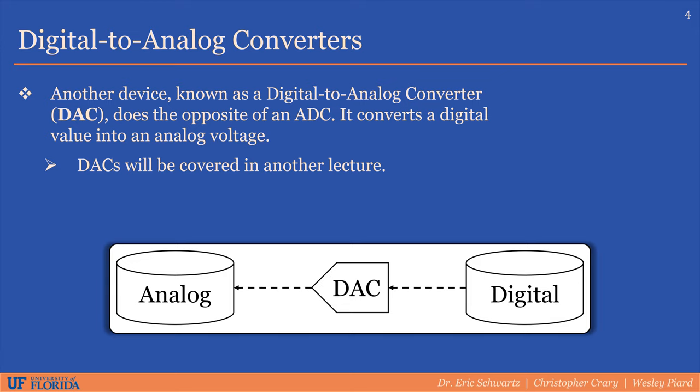Once we process some data digitally, we may wish to re-output it back to the analog domain. An example of this would be digital signal processing. We can convert an analog signal into a digital form using an ADC, then do some processing such as adding effects like echoes, and then re-output it as an analog signal again to go to speakers to be heard.